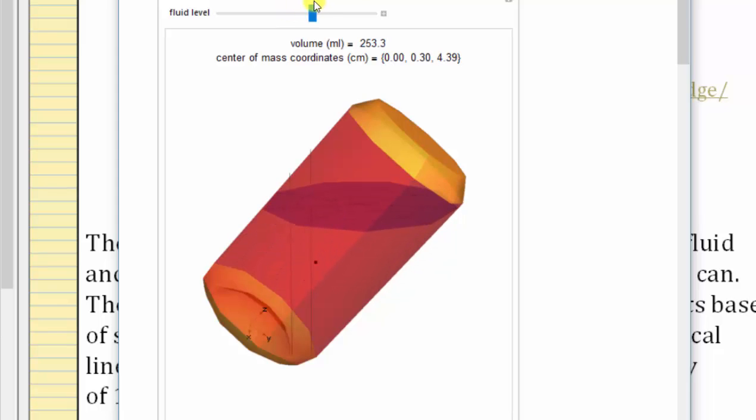Notice that at this fluid level, the center of mass is again outside the two vertical lines. Therefore the center of mass is not above the base of support, and the can will no longer balance on its edge.